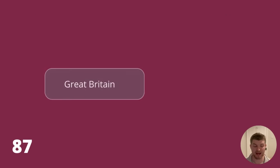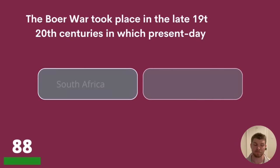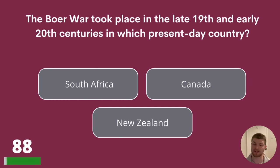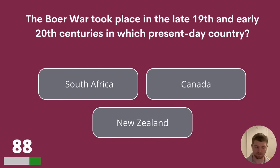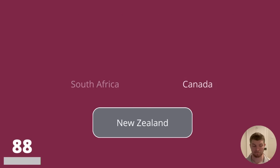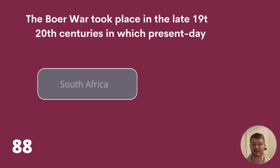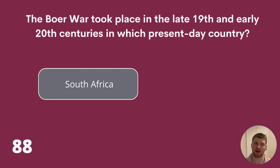Question 88. The Boer War took place in the late 19th and early 20th centuries in which present-day country? South Africa, Canada, or New Zealand? The answer is South Africa.